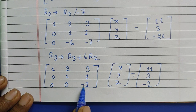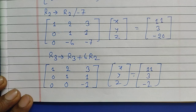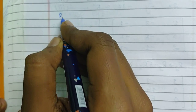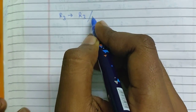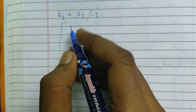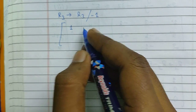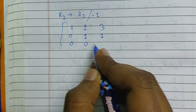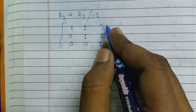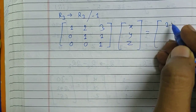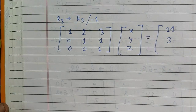Now we have made the second column entry in R3 equal to zero. We still need to make the R3 pivot positive 1. Dividing R3 by minus 1, we apply R3 implies R3 divided by minus 1. R1 remains [1, 2, 3 | 11] and R2 remains [0, 1, 1 | 3]. R3 becomes [0, 0, 1 | 2] after dividing minus 1 by minus 1 to get positive 1, and minus 2 by minus 1 to get plus 2.